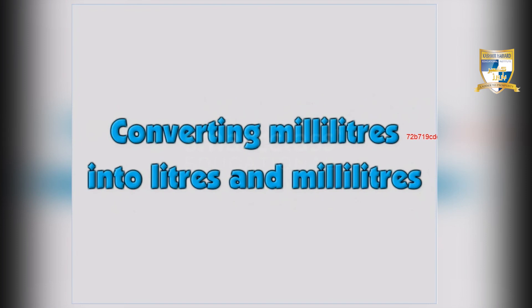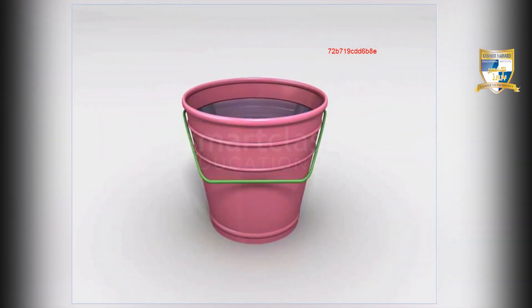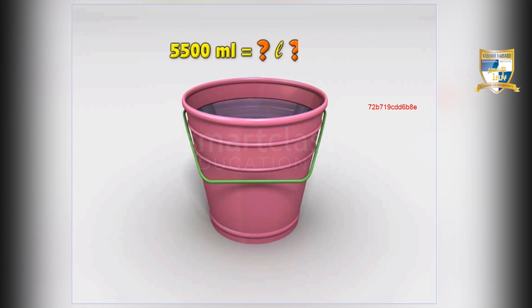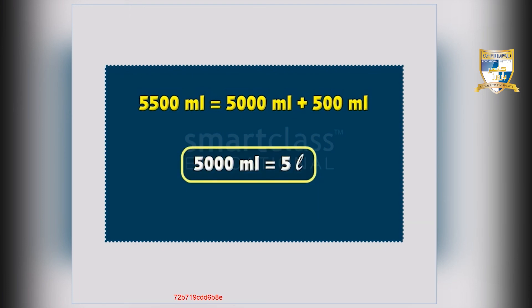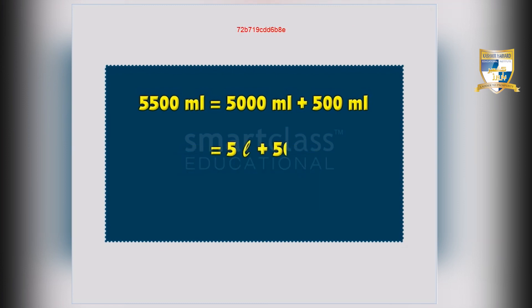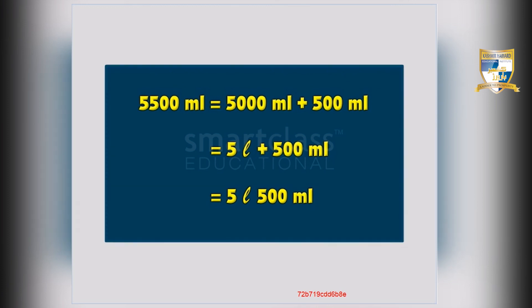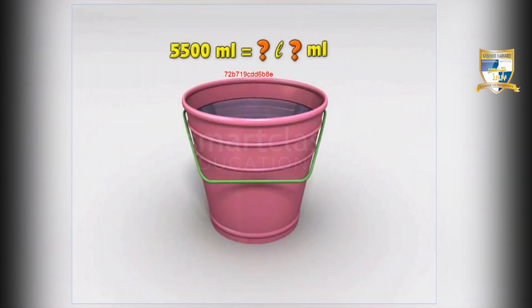Let us try converting millilitres into litres and millilitres. The volume of the water in the pail is 5500 millilitres. What is its volume in litres and millilitres? First, split 5500 millilitres into 5000 millilitres and 500 millilitres. 5000 millilitres equals 5 litres. So you get 5 litres plus 500 millilitres, which is 5 litres 500 millilitres. So the volume of the water in the pail in litres and millilitres is 5 litres 500 millilitres.